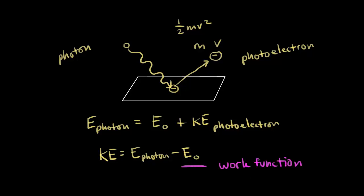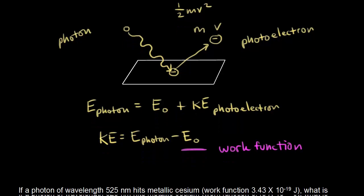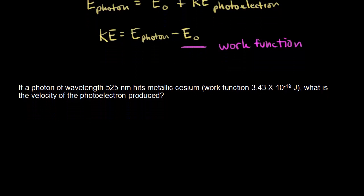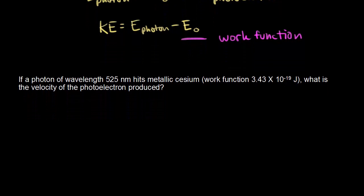Now that we understand the general idea of the photoelectric effect, let's do a problem. The problem says: if a photon of wavelength 525 nanometers hits metallic cesium — and here's the work function for metallic cesium — what is the velocity of the photoelectron produced? The velocity is hiding in the kinetic energy. We know the work function, so we know E-naught. What we don't know is the energy of the photon, so that's what we need to calculate first.